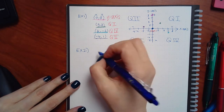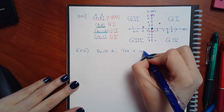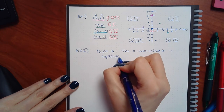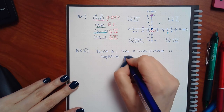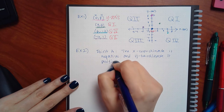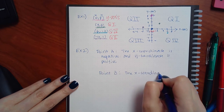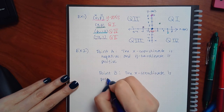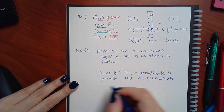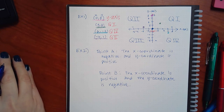Now these are a little bit different. For point A: the x coordinate is negative and the y coordinate is positive. For point B: the x coordinate is positive and the y coordinate is negative. I'm going to click to see if there's a different situation — yes, there is. For point C: the x coordinate is negative and the y coordinate is zero.